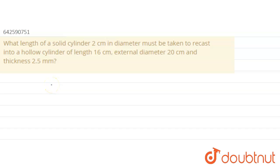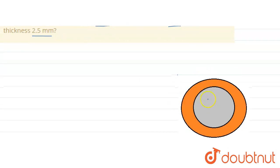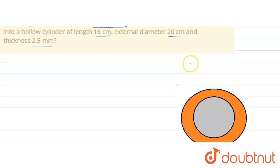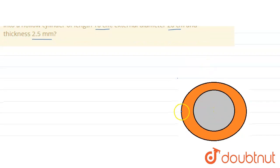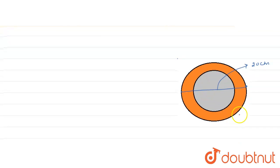Hello everyone. Let us solve the question: what length of solid cylinder, 2 centimeters in diameter, must be taken to recast into a hollow cylinder of length 16 centimeters, whose external diameter is 20 centimeters and thickness is 2.5 millimeters? Let us draw a figure of the hollow cylinder. This is the hollow cylinder, and the external diameter is 20 centimeters.